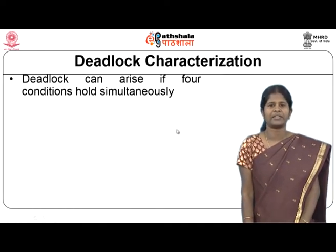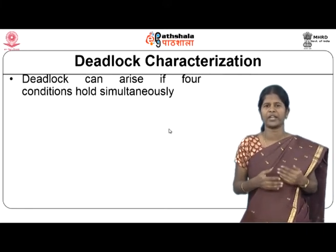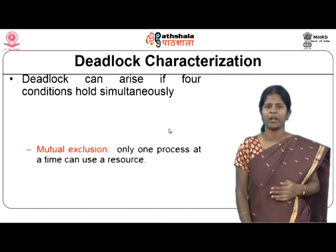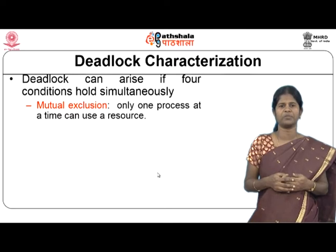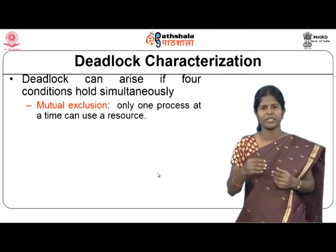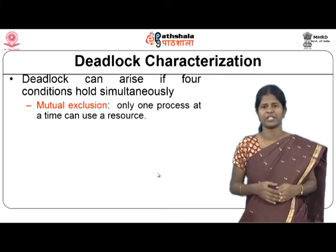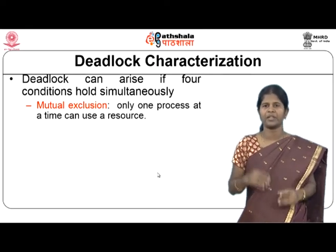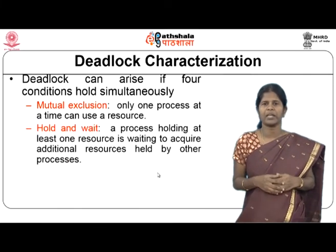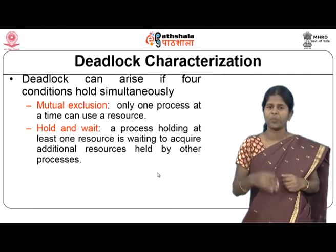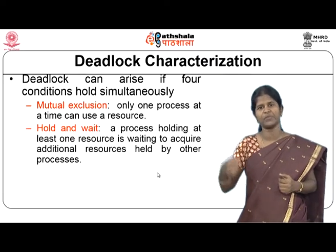Deadlock characterization: deadlocks occur when four conditions hold simultaneously. The first is mutual exclusion — only one process can use a resource at a time. The second is hold and wait — a process holding at least one resource is waiting to acquire additional resources currently held by other waiting processes.